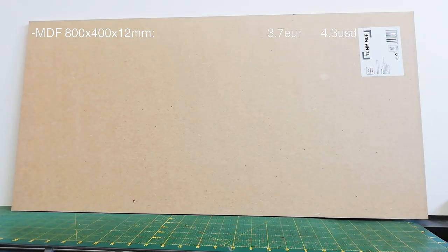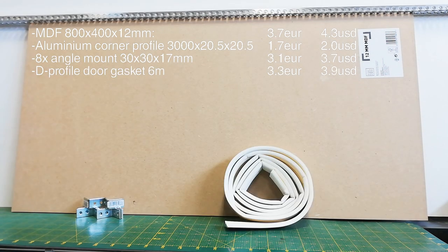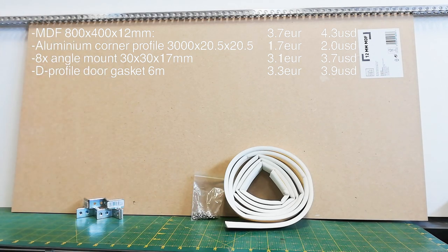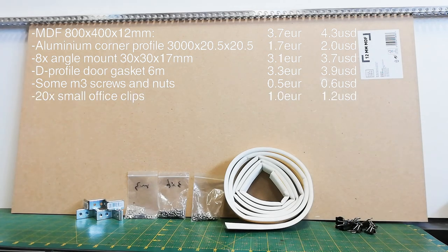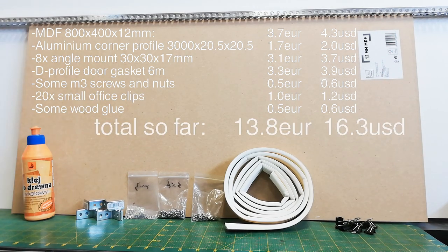When the model was ready, I bought all the necessary materials. MDF, aluminum corner profile, 8 angle mounts, D profile door gaskets, and some consumables I already had at home, M3 bolts and nuts, small office clips, and some wood glue. So far so good.